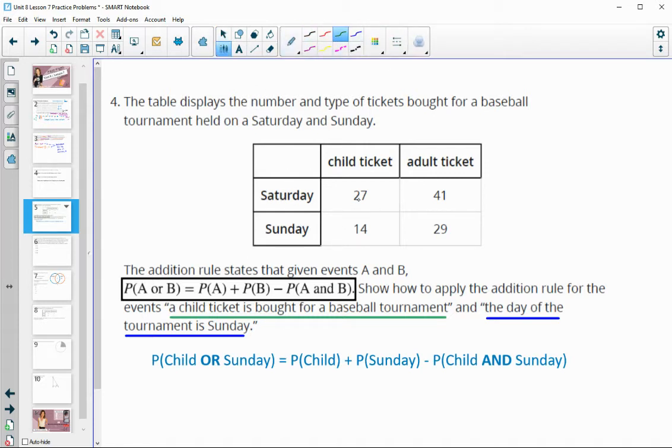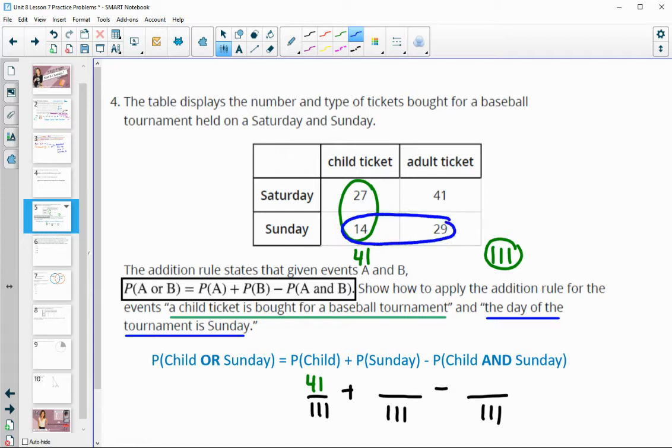If we take a look at these, so a children's ticket is here, and so that's 41. And there were, if we add up all of these numbers here, 27 plus 14 plus 41 plus 29, there were 111 total tickets. So the probability that it is a child's ticket is going to be 41 out of 111. And then the probability that it's on Sunday is going to be 14 plus 29 out of 111, so 43 out of 111. And then we would subtract the one that is both a child's ticket and Sunday, so that would be 14 tickets. And we'll see that if we do 41 plus 43 minus 14, we get 70.